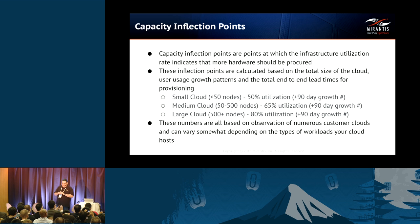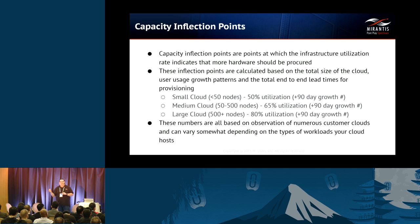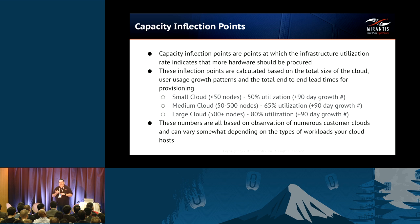These inflection points are calculated based on the total size of the cloud, the user growth patterns, and the total end-to-end lead times for provisioning. We put those three together to generate our capacity plan model. On small clouds — less than 50 nodes — we're looking at about 50% utilization. Once we've utilized 50% of the available resources in the cloud, we trigger the process to provision more hardware.